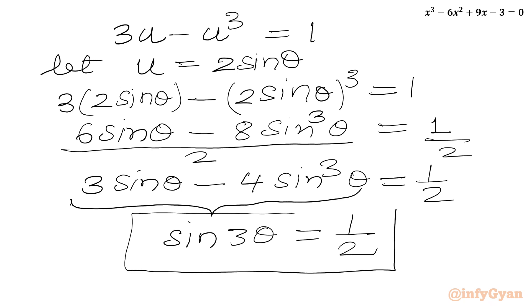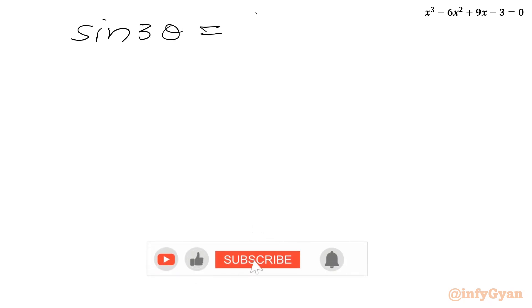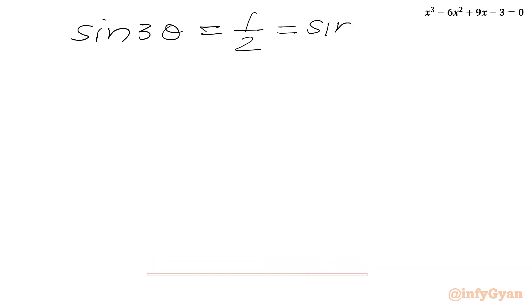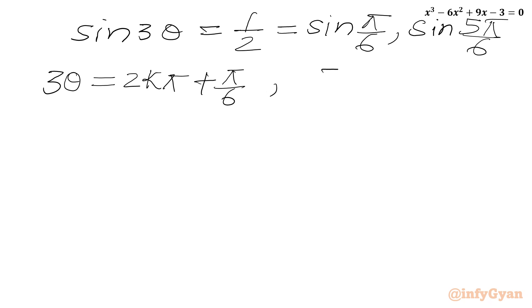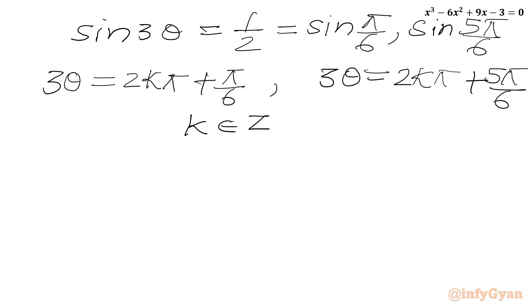So we can write sin 3θ equal to 1/2. This is a trigonometric equation which we can easily solve using the general solution method. Since sin(π/6) = 1/2, or sin(5π/6) = 1/2, the general solution is 3θ = 2kπ + π/6, where k is an integer with k equal to 0, 1, 2.